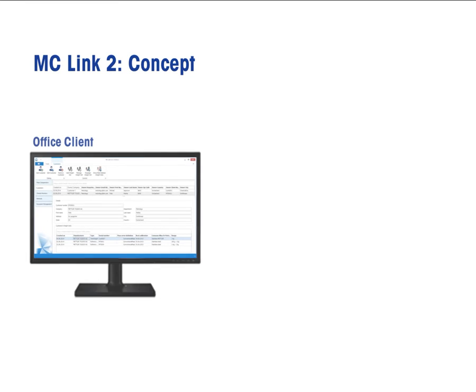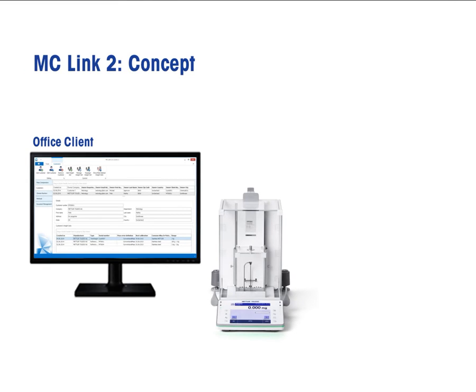The software is built in two sections. With the office client, all administrative tasks are managed. For example, installation of comparators and climate sensors, definition of the weighing process, and uncertainty analysis. Here, we also manage customer data and calibration methods.